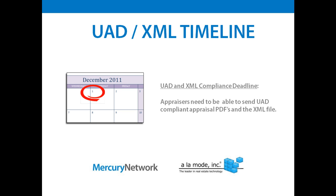December 1st, all appraisals being sold to Fannie Mae and Freddie Mac are required to include the UAD-compliant PDF as well as that XML file. Lenders that have appraisers who can't deliver the XML file with the UAD-compliant PDF are going to be looking at additional charges because Fannie is going to have to wind up converting that report from the PDF. A lender's best bet is to ensure that their preferred appraisers can deliver both before that December 1st deadline.